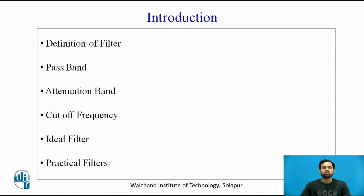In the case of an ideal filter, frequency signals in the pass band are passed through the filter circuit with zero attenuation, and frequency signals in the attenuation band are fully suppressed. This type of filter circuit is called an ideal filter.